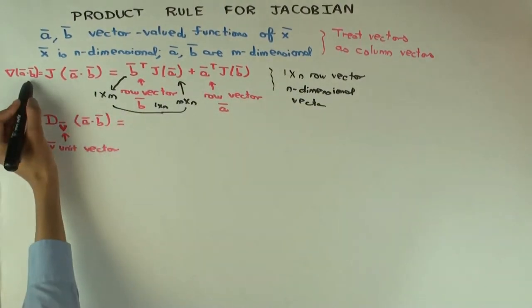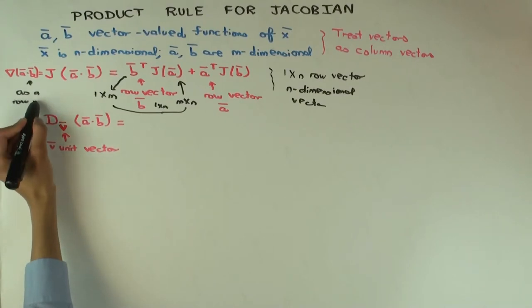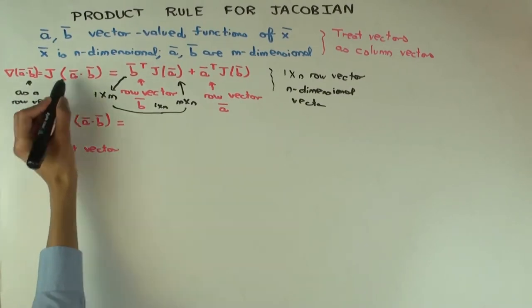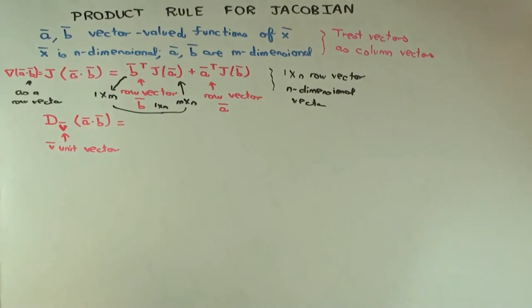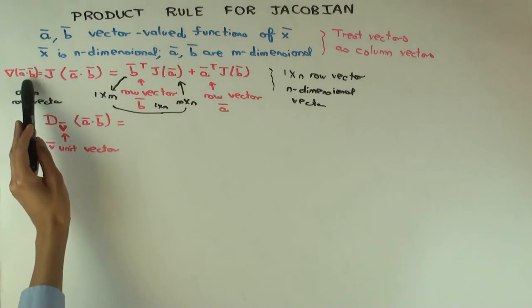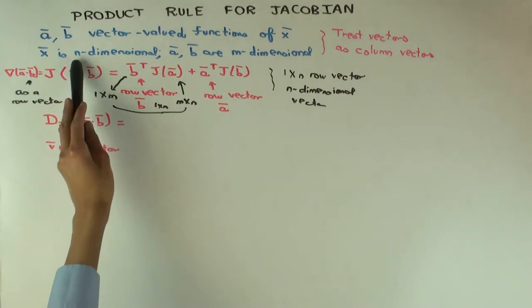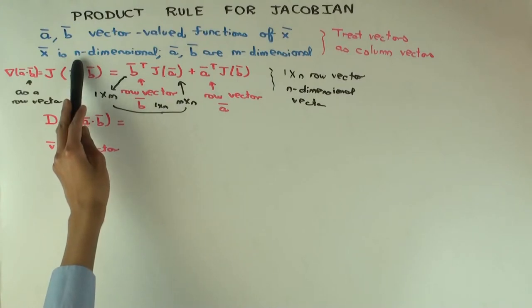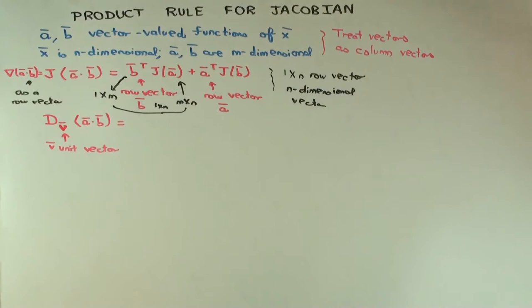This is as a row vector. The gradient of a dot b is, you're getting the gradient vector as a row vector. So dimensionally it seems to match up. If you think of the gradient vector of a dot b, a dot b is a scalar function of an n dimensional variable, so the gradient should be an n dimensional thing. So that matches up, this looks reasonable.